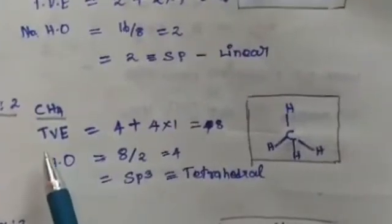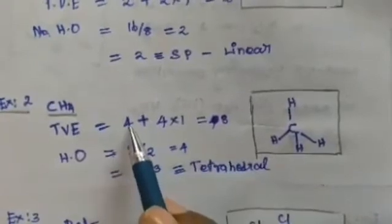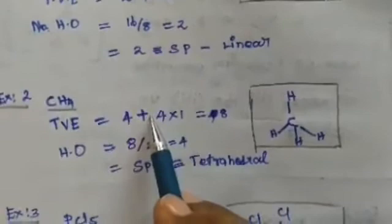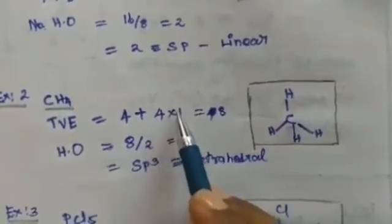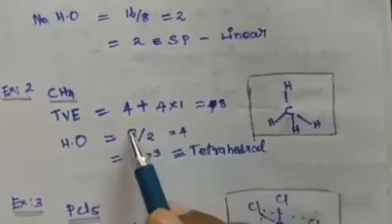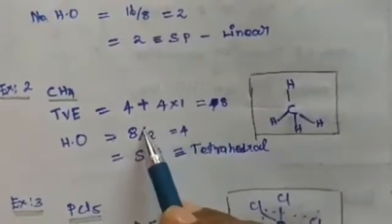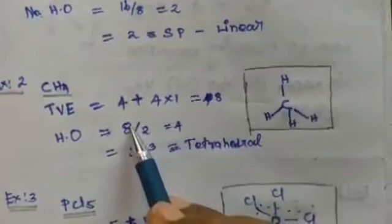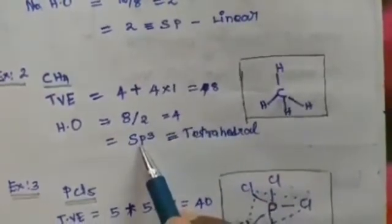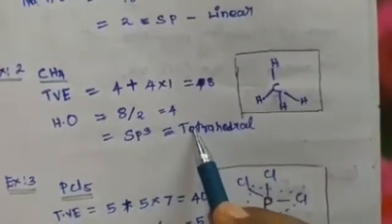Example 2: methane (CH₄). Carbon is the central atom with 4 valence electrons. There are 4 surrounding hydrogen atoms, each with 1 valence electron. The total valence electrons equal 8. Since 8 is less than or equal to 8, we divide by 2, giving 4 hybrid orbitals. Therefore hybridization is sp3 and geometry is tetrahedral.